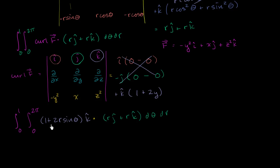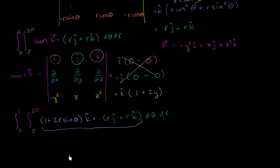When we take the dot product, this thing only has a k component. The j component is 0, so when you take the dot product with the j component you get 0, and neither of them have an i component. So we just have to think about the k components, because everything else is 0. It's going to be r times this, giving us r plus 2r squared sine theta, dθ dr.